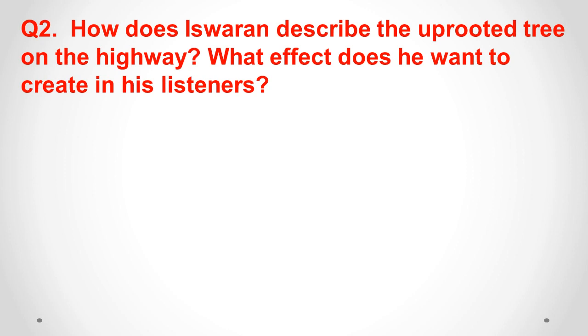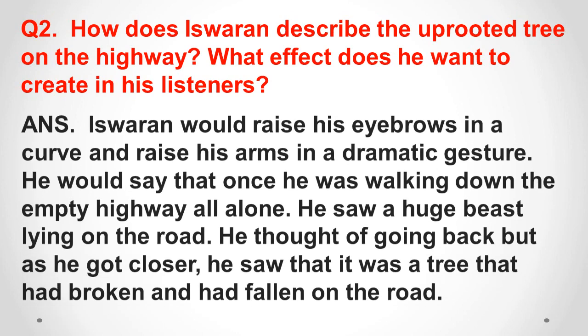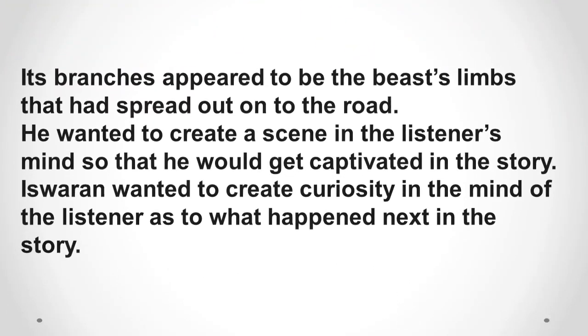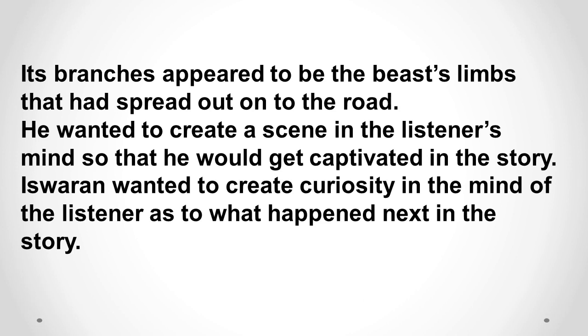Question 2: How does Ishwaran describe the uprooted tree on the highway, and what effect does he want to create? Answer: Ishwaran would raise his eyebrows and arms in a dramatic gesture. He would say that once he was walking down an empty highway all alone and saw a huge beast lying on the road. As he got closer he saw it was a tree that had broken and fallen — its branches appeared to be the beast's limbs spread out on the road. He wanted to create curiosity in the listener's mind as to what happened next.